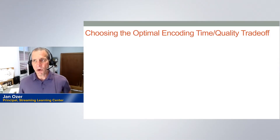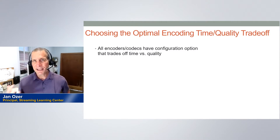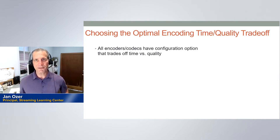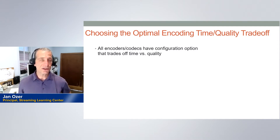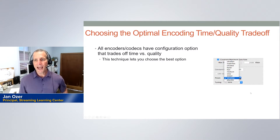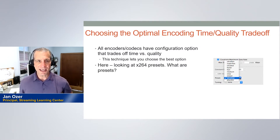We're looking at choosing the optimal encoding time/quality trade-off within the context of an x.264 preset. All encoders and codecs have configuration options that trade off quality versus time. This applies to most AVC encoders and many h.264 encoders, particularly in ffmpeg. The technique I'm going to use lets you visualize how they differ and choose the best option.